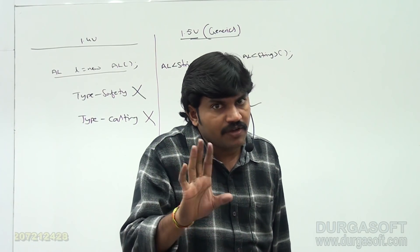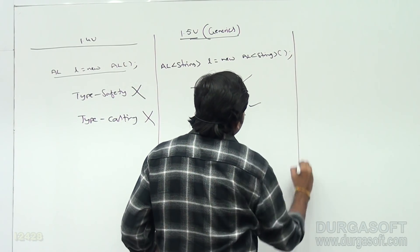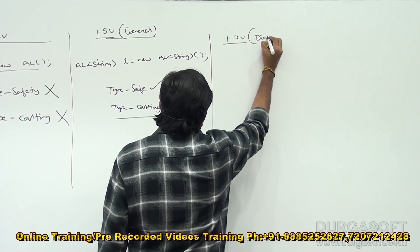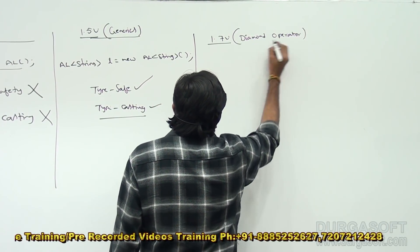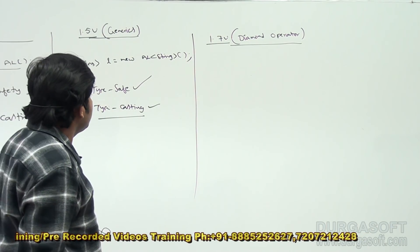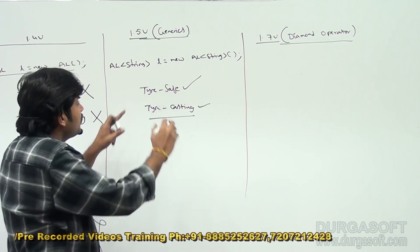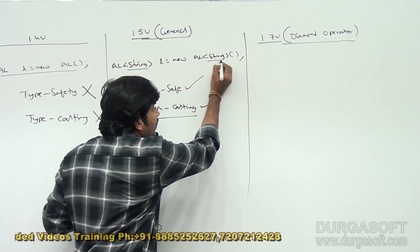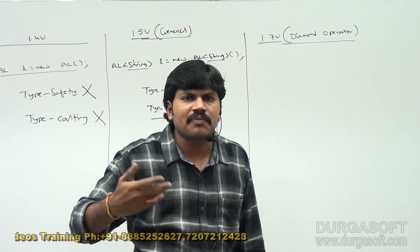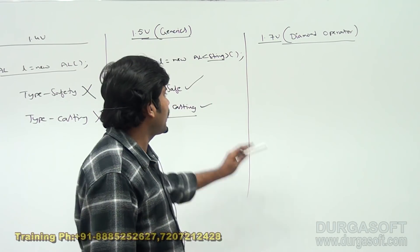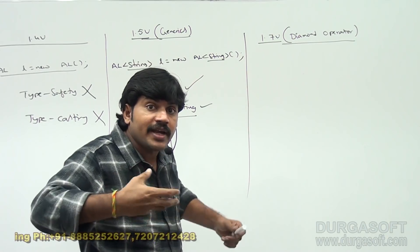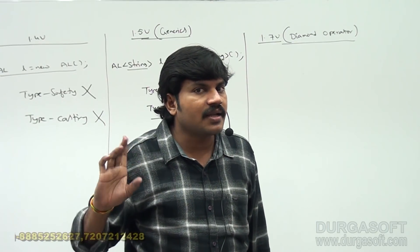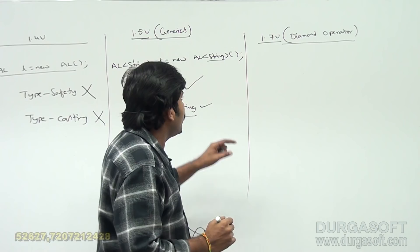In Java 1.7, the diamond operator came. In the declaration part we specify the type parameter, and in the constructor call while creating the object we again specify the type parameter. How many times are you going to repeat the type parameter? From Java 1.7, the second time you are not required to repeat the type parameter — that is the diamond operator.